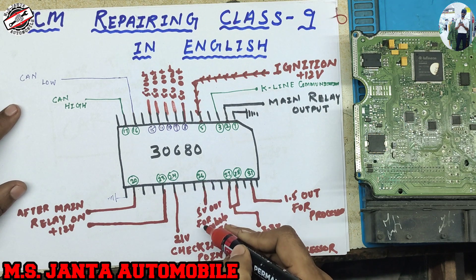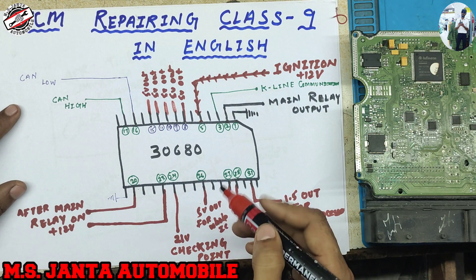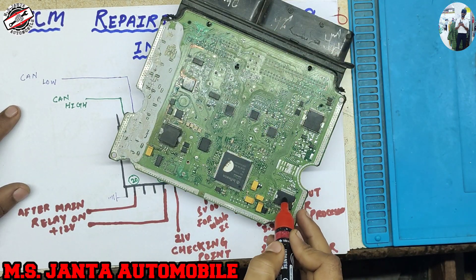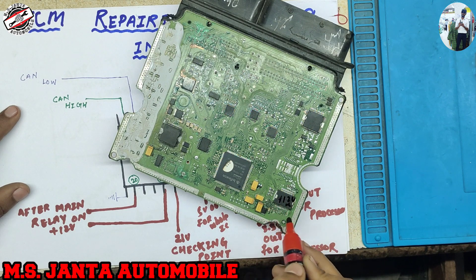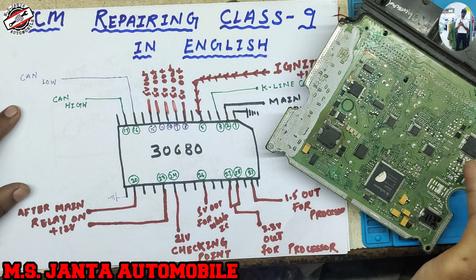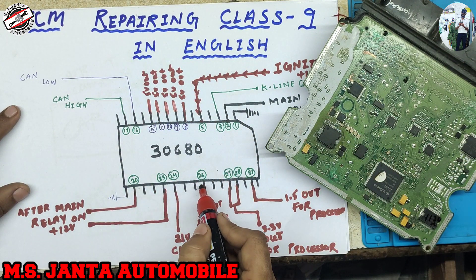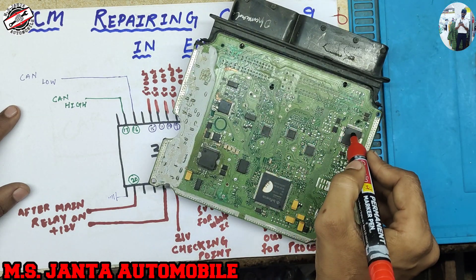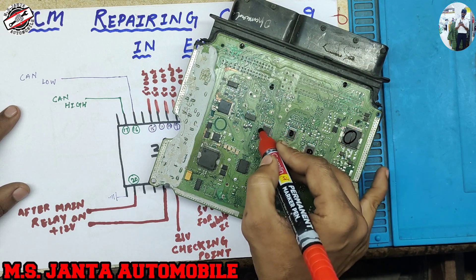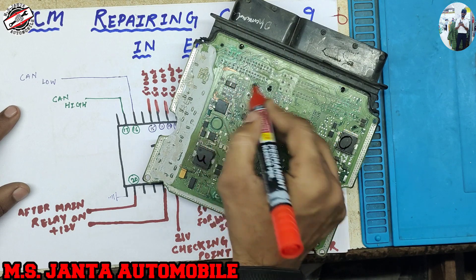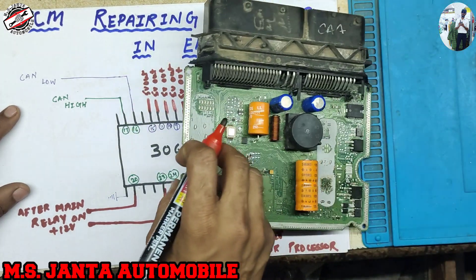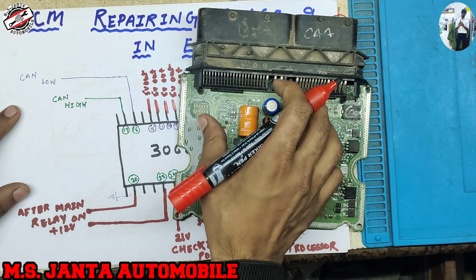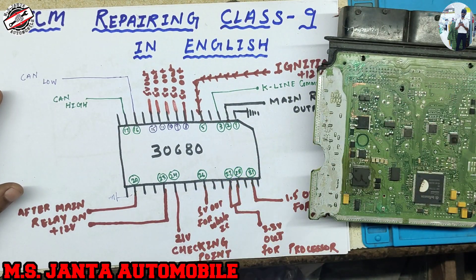Also, pin number 26 outputs 5 volts for the whole IC system. When this IC receives 12 volts from the main relay, it produces and outputs 5 volts on pin 26. This 5-volt signal goes to all ICs — this IC, this IC, this IC, and also the processor. This is an enable signal; any IC works on 5 volts.